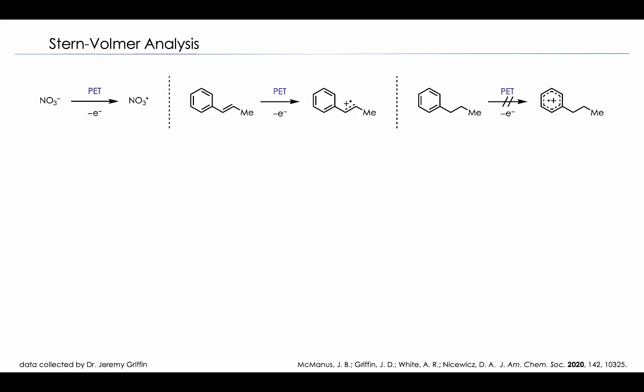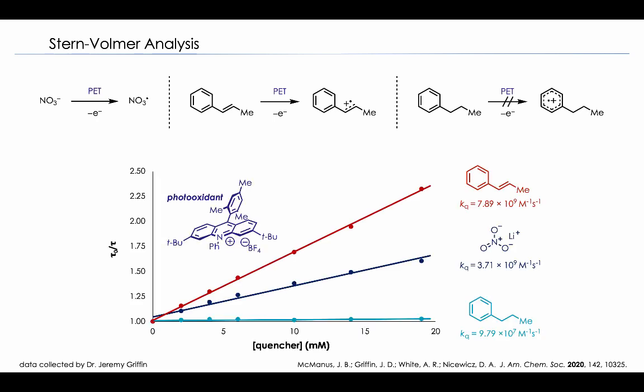Next we turn to Stern-Volmer analysis to probe the electron transfer events that we're proposing for this type of catalytic cycle. So we propose that the nitrate anion is oxidized to the nitrate radical and that the styrene is oxidized to the olefin radical cation. We do acknowledge that it's possible that the propylbenzene starting material could be oxidized to the arine radical cation. However, we don't expect that to be an operative mechanistic pathway. So when plotting these experiments, we see that the styrene and the nitrate anion both quench the excited state acridinium on the order of 10 to the 9 per molar per second. We do also see that the propylbenzene starting material does quench the excited state acridinium on the order of 10 to the 7 per molar per second. However, due to the extremely short lifetime of the acridinium photooxone, we don't expect this to be an operative elementary step in this reaction mechanism.